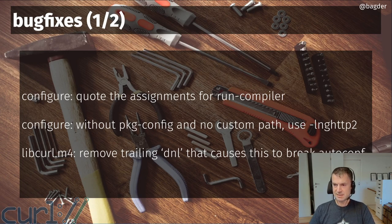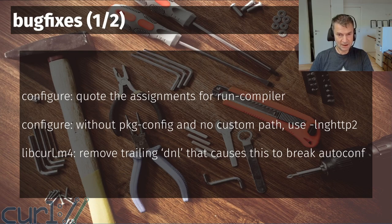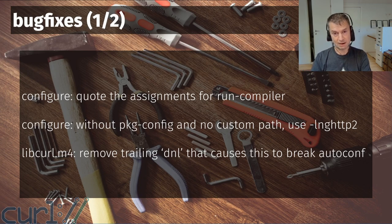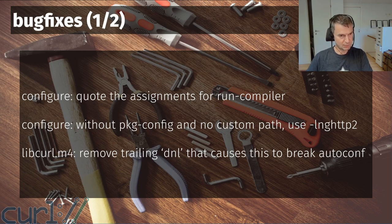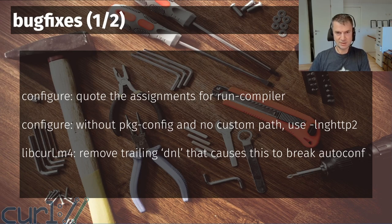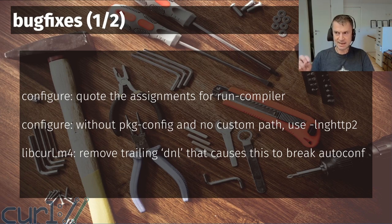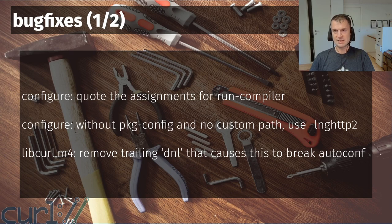We also fixed the libcurl.m4 file, which is a configure macro helper file we provide for other projects to use to detect libcurl in their configure scripts. We don't use it ourselves — we ship it as a helpful script for others. There was a trailing 'dnl' — and dnl in m4 is a comment prefix — so we fixed that, and it's a little better than before.